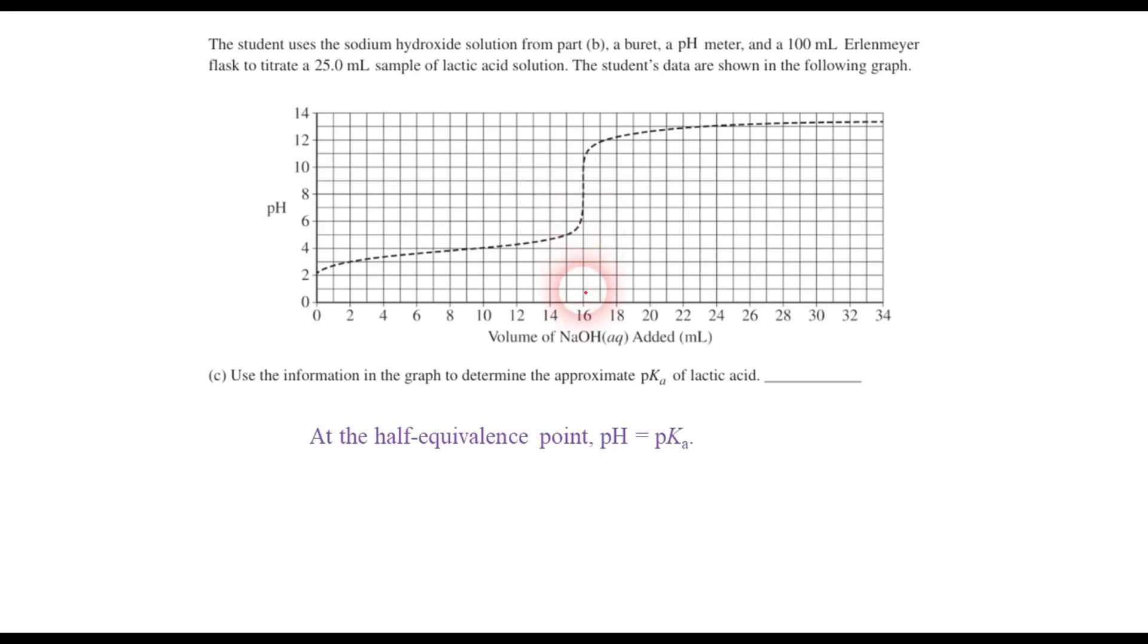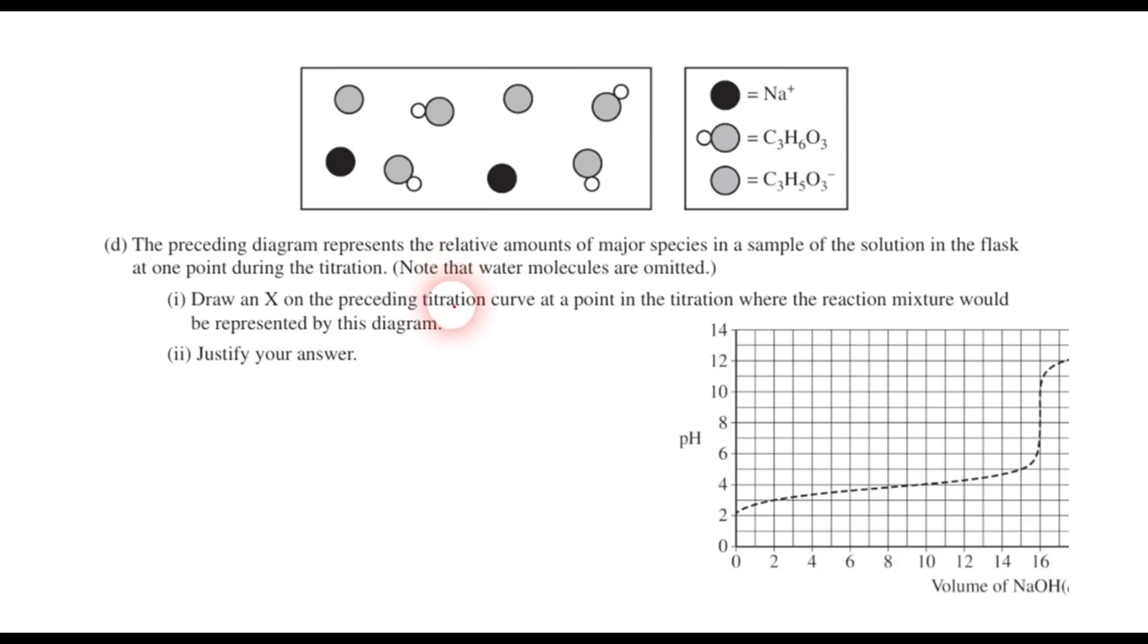So looking at the titration curve, this inflection point, which represents the equivalence point, is at 16 milliliters. So the halfway point would be 8 milliliters, right around here. And the pH at that point seems to be very close to 3.9, as far as I can tell. So the pKa is 3.9.